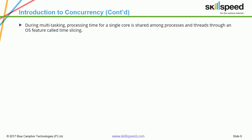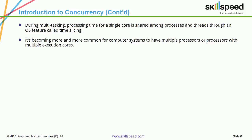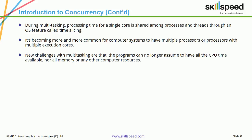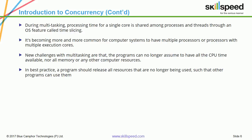During multi-tasking, processing time for a single core is shared among processes and threads through an OS feature called time slicing. It is becoming more and more common for computer systems to have multiple processors or processors with multiple execution cores. New challenges with multi-tasking are that programs can no longer assume to have all the CPU time, memory, or any other computer resources available. As best practice, a program should release all resources that are no longer being used so that other programs can use them.